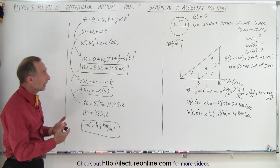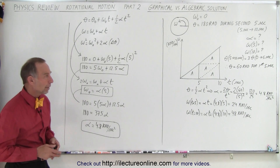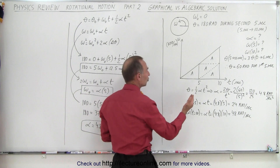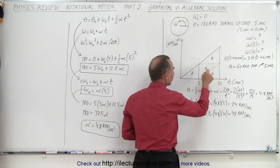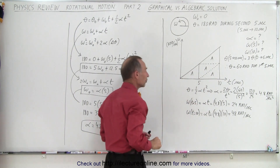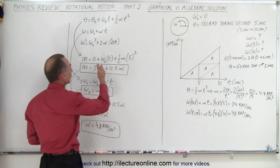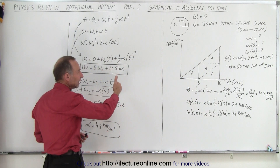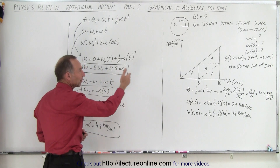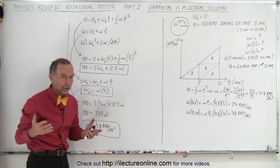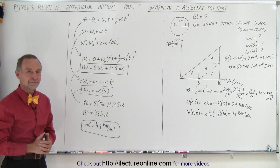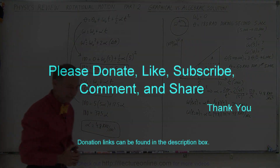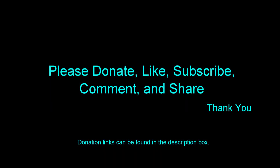That is how we solve an otherwise very difficult problem using the graphical method — using the relationship that the distance traveled during the second five seconds is three times the distance during the first five seconds — and using the algebraic method with the principle that the velocity at the end of ten seconds is twice the velocity at the end of five seconds under constant acceleration. Thank you.